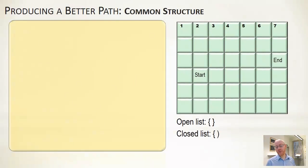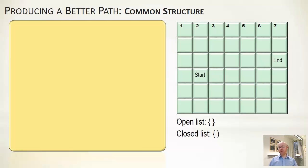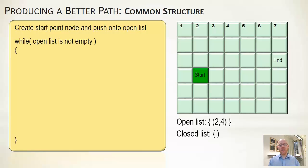Initially, the open list and closed list are both empty. We push the start point onto the open list. The algorithms run while the open list is not empty — if it becomes empty before we've reached the end, there is no reachable path. While the open list is not empty, we pop a node, check if it's our destination, and if not, we generate its successor nodes.